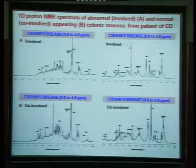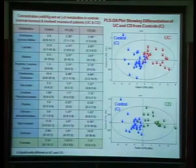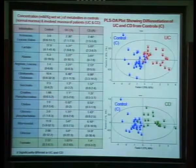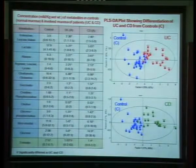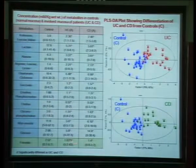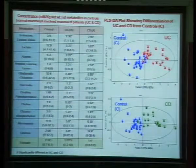This is the spectrum from the uninvolved area and the involved area from Crohn's disease. These are the quantitative results comparing metabolite concentrations in controls and patients with UC and CD. From the involved area, you may see that concentrations of several metabolites like isoleucine, leucine, lactate, alanine, arginine, and glutamate are significantly lowered in IBD patients, while the concentration of glucose is significantly higher. Formate appears to be the one metabolite different between UC and CD patients, suggesting its potential as a biomarker.